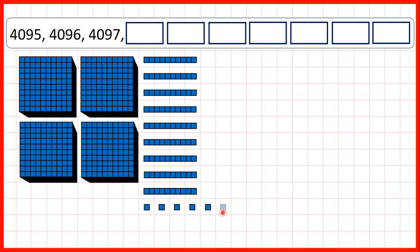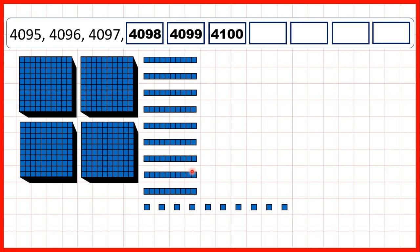Next we have 4096, then 4097. If we keep on adding ones, we get to 4098, 4099, then 4100. Now this doesn't look like 4100, but notice now we've got 10 ones, and we can exchange 10 ones for one more 10.